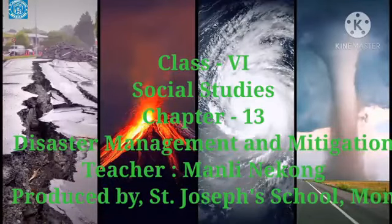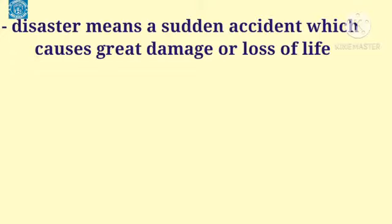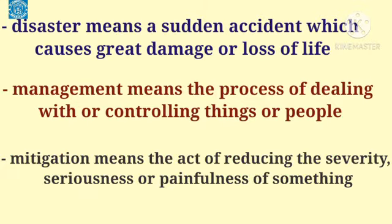Hello dear students, today we shall be learning chapter 13, which is about disaster management and mitigation. You will find this chapter on page number 89. Disaster means a sudden accident that causes great damage or loss of life. Management means the process of dealing with or controlling things or people. And mitigation means the action of reducing the severity, seriousness, or painfulness of something.